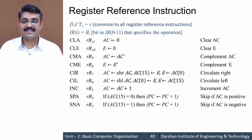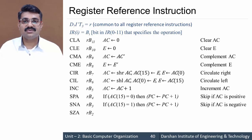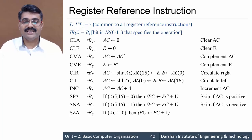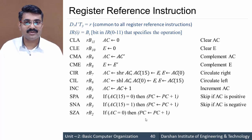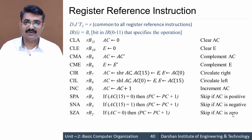The next instruction is SZA — it happens at r·b2. The meaning is skip the next instruction if AC is 0. If all bits of the accumulator are 0 then the next instruction is skipped by incrementing the program counter: PC equals PC plus 1. So skip if AC is 0.